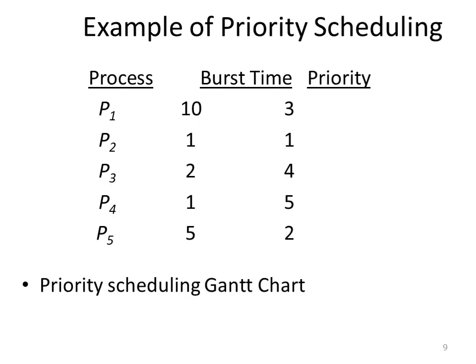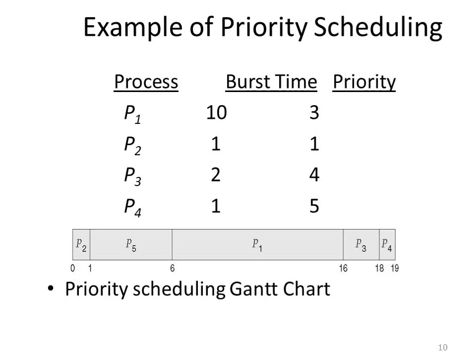Consider the priority scheduling example in slide number 9, which consists of five processes P1, P2, P3, P4 with their burst times and priorities shown in the table. Since the lowest number represents the highest priority, P2 is allocated with the CPU first, then P5 with priority 2, then P1 with priority 3 and burst time of 10 ms, then P3 with priority 4, and finally P4 gets a CPU cycle. This is shown in the Gantt chart in the slide. Thank you all.